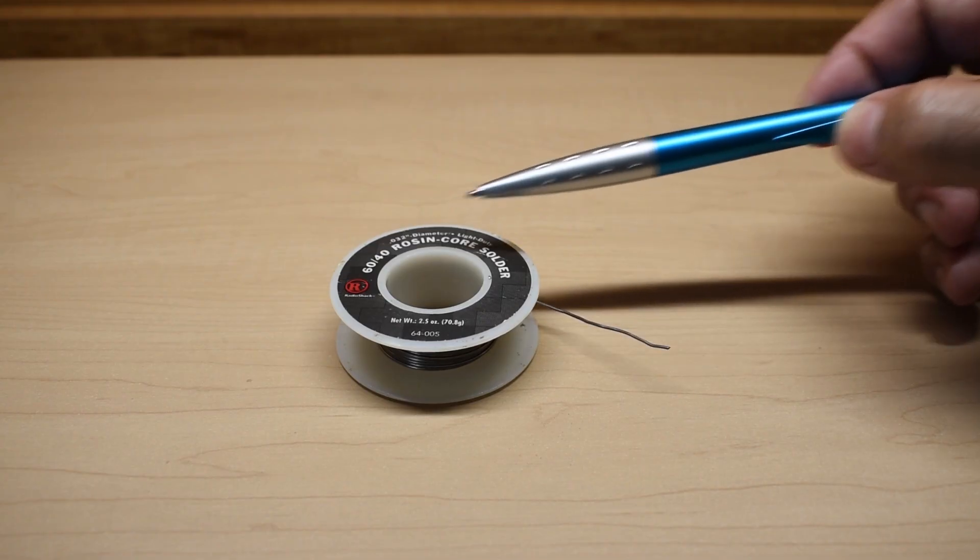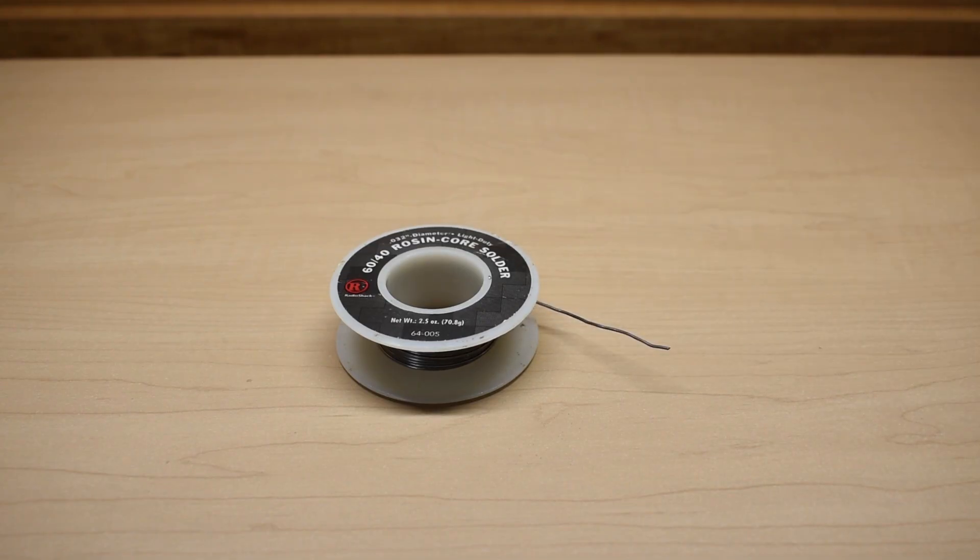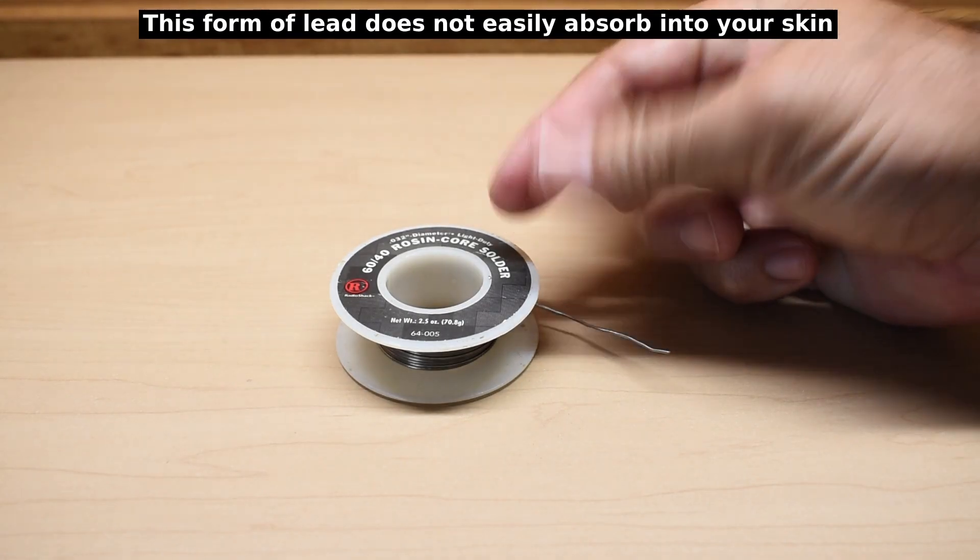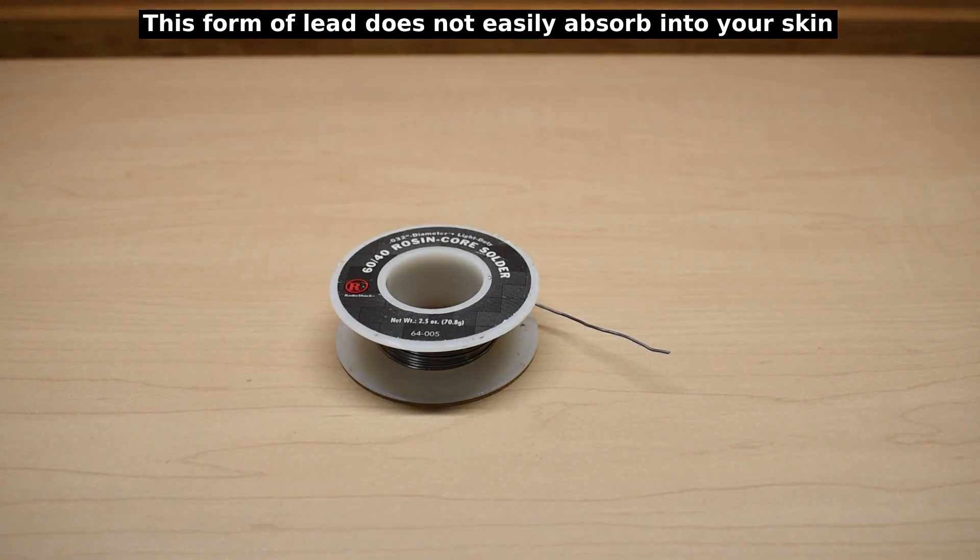Do not use lead-free solder. Make sure you use 60% tin and 40% lead. It flows much better, and you do not have to worry about getting it on your fingers when you're done. Just wash your hands with soapy water.